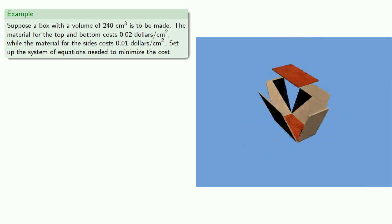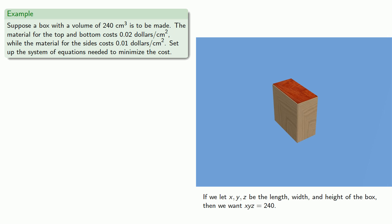Or, suppose we want to make a box with a constant volume, and the material for the top and bottom cost differently than the material for the sides. And we want to set up the system of equations needed to minimize the cost of the box. So if we want x, y, and z to be the length, width, and height of the box, we want the volume, the product to be 240. And so our constraint can be expressed as v of x, y, z equals 240, where v of x, y, z is xyz.